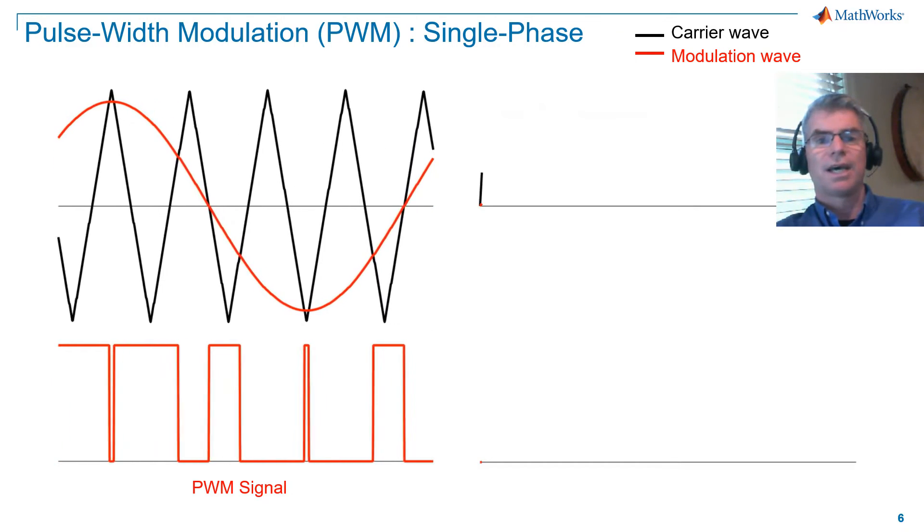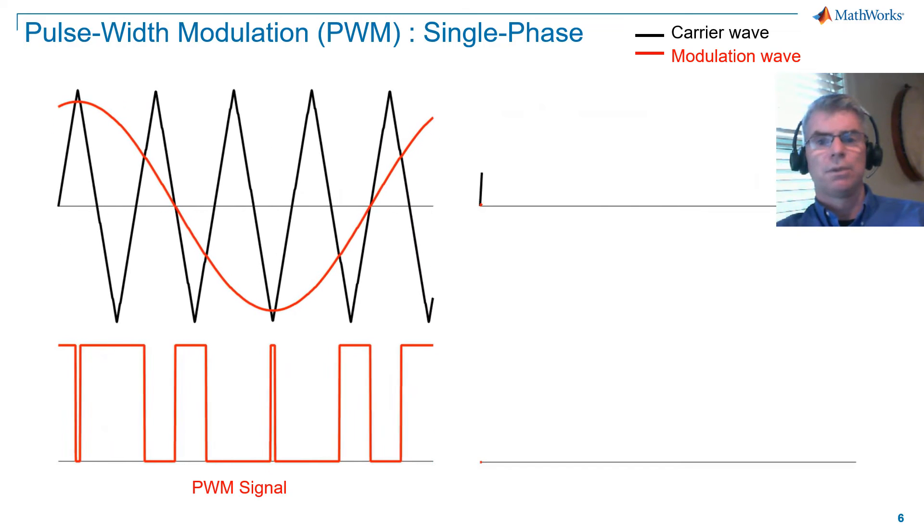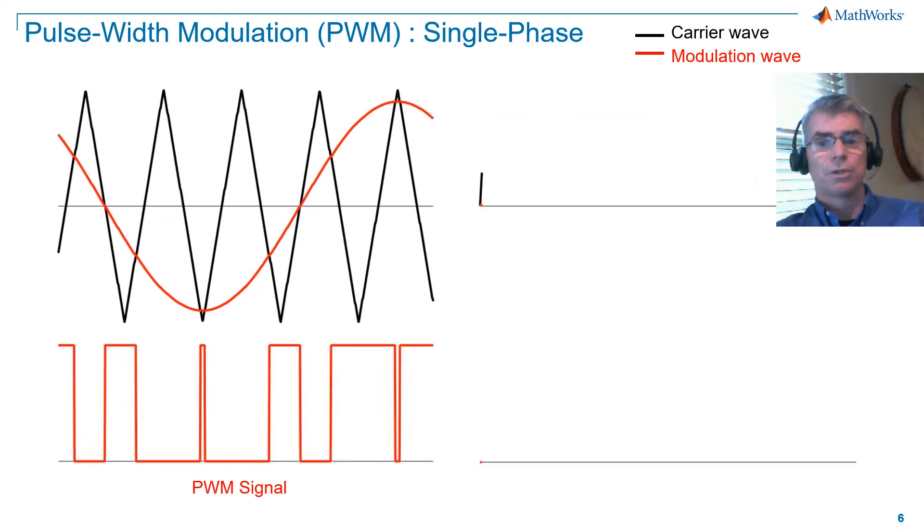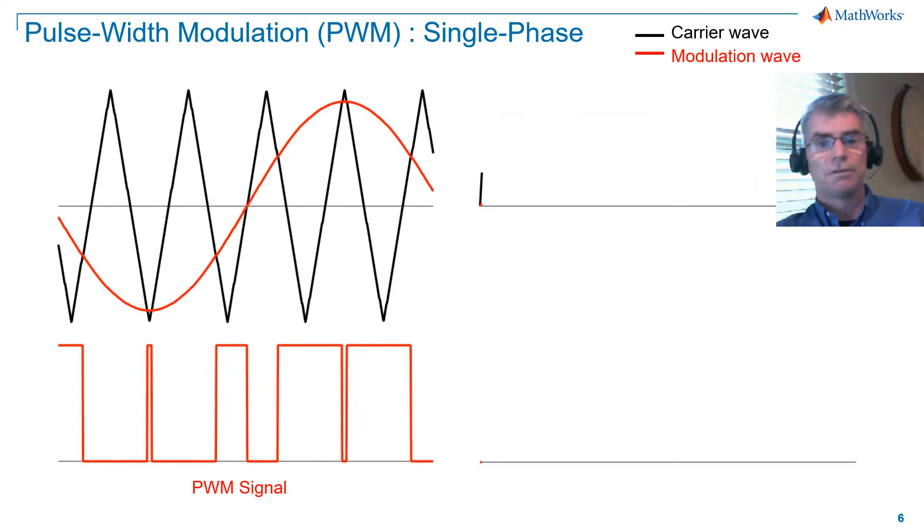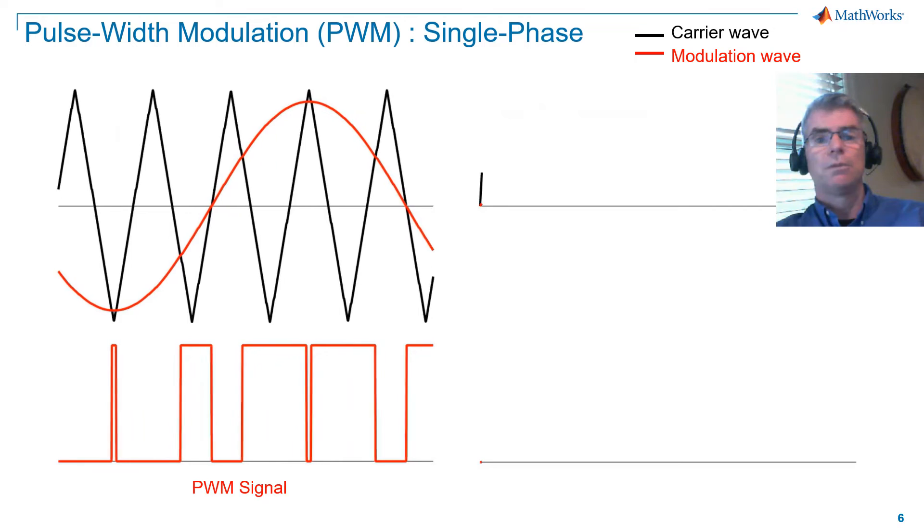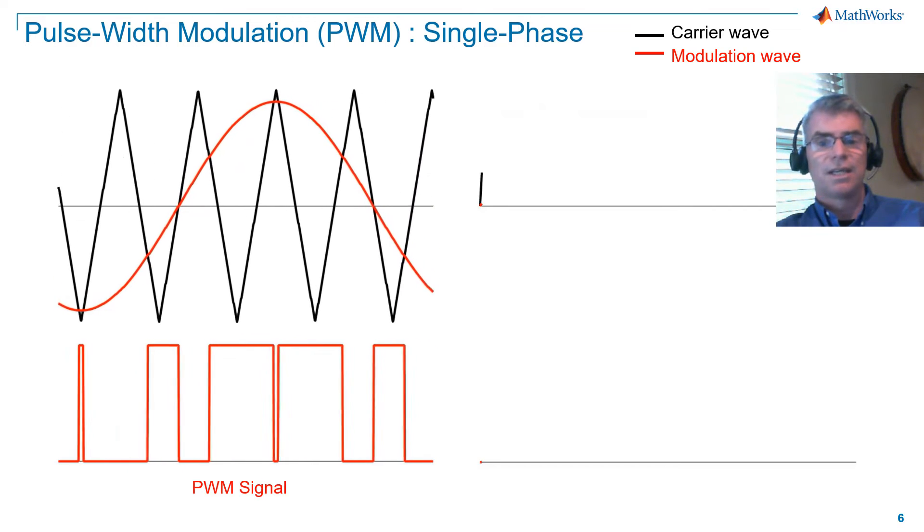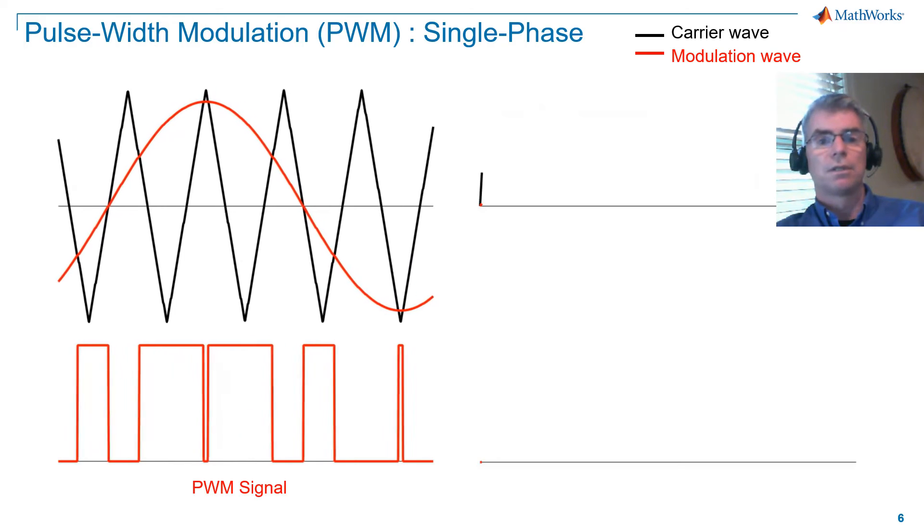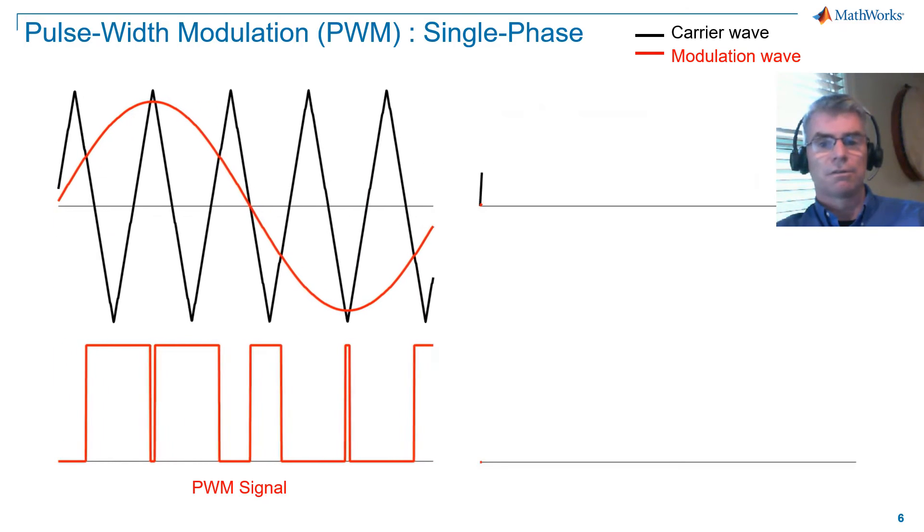Pulse width modulation encodes a sinusoid onto a high-frequency binary signal. It does this by comparing a high-frequency carrier wave, which in this case is a triangular wave shown in black, with the sinusoid we want to emulate, known as the modulation wave. You can see that when the modulation wave is greater than the carrier wave, the binary signal is on, and when the modulation wave is lower than the carrier wave, the binary signal is off.